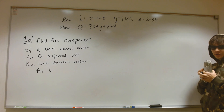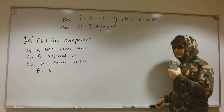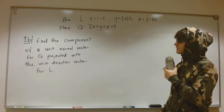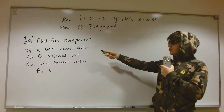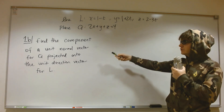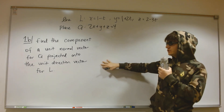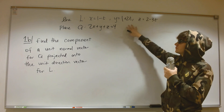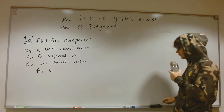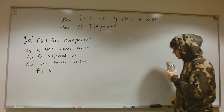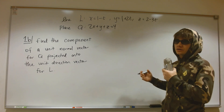Today we're going to cover problem 1b from the calc exam. It's asking for the component of a unit normal vector for the plane Q projected onto the unit direction vector for the line from the previous part of the problem. To start this problem off, I'm going to note that the equation for the normal vector of Q is embedded in the plane equation and we can easily figure it out.